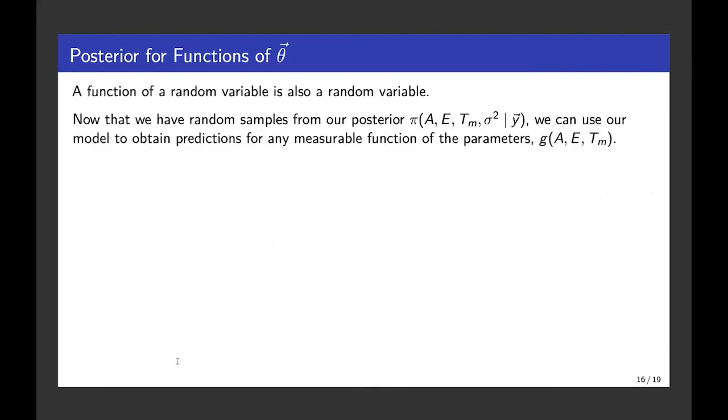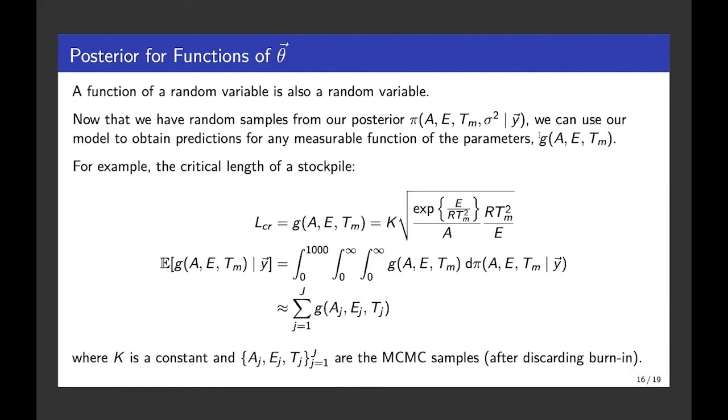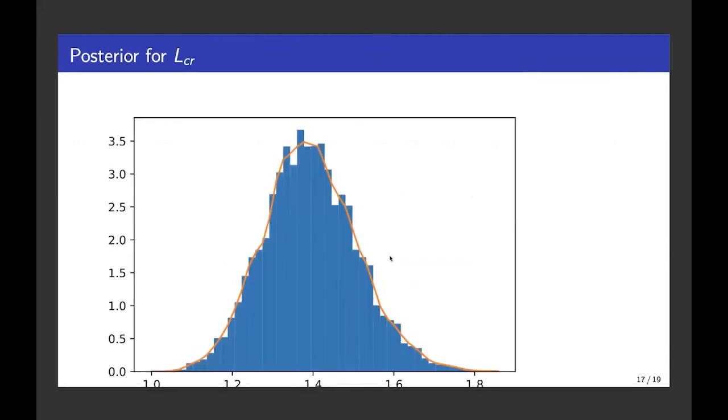I mentioned calculating a function of our parameters. And this is another advantage of that Bayesian approach. So once we have our posterior distribution for our parameters of our model, we can then obtain predictions for any other function of those parameters that we choose to evaluate. And the main one in this context is the critical length of a stockpile of the material that's in one dimension, or in three dimensions we'd have the critical volume of material. And so we can evaluate that function for all of our MCMC samples. And that then gives us a posterior distribution for the value of that function, in this case the critical length.